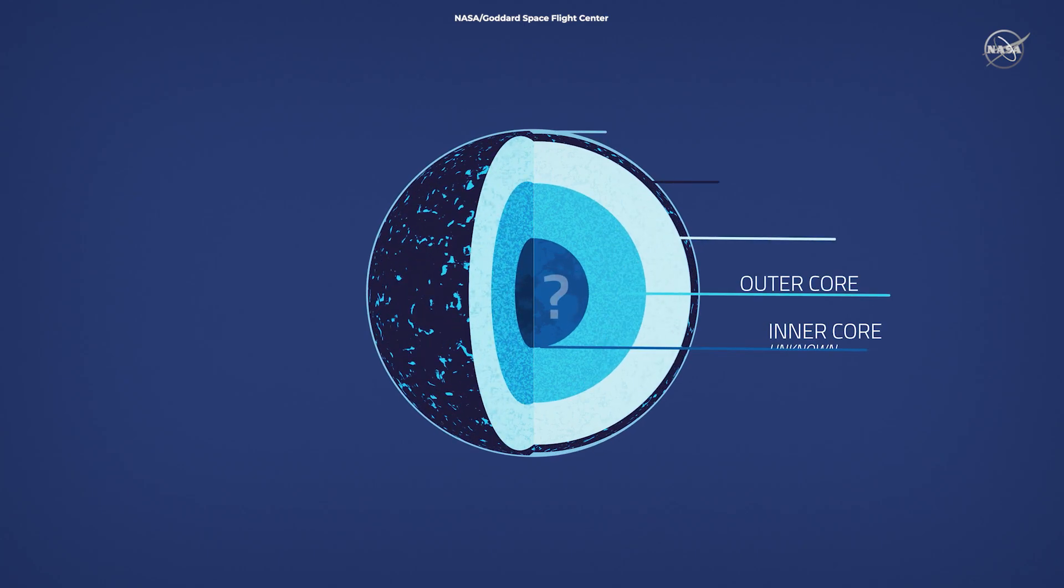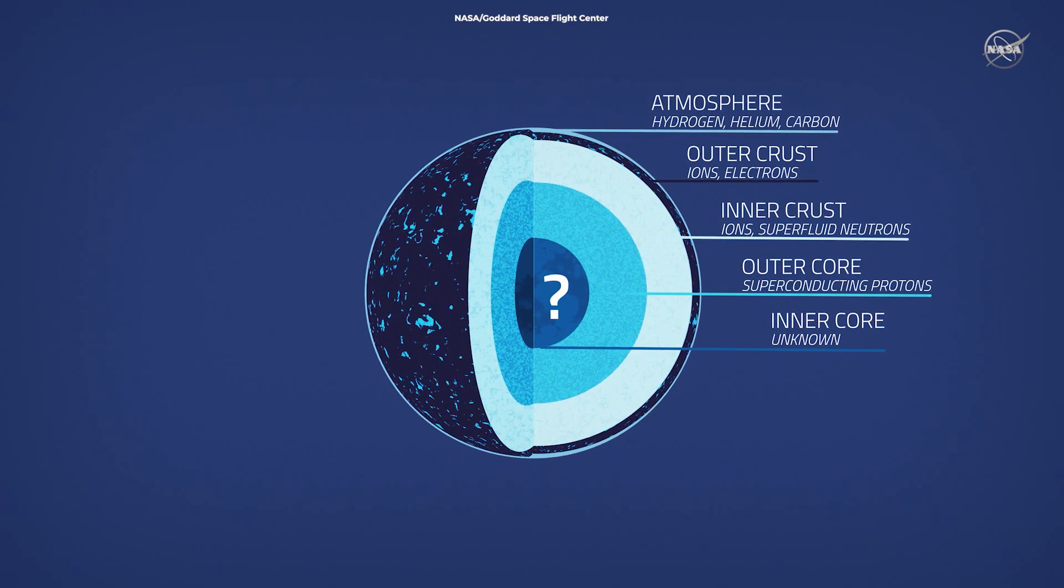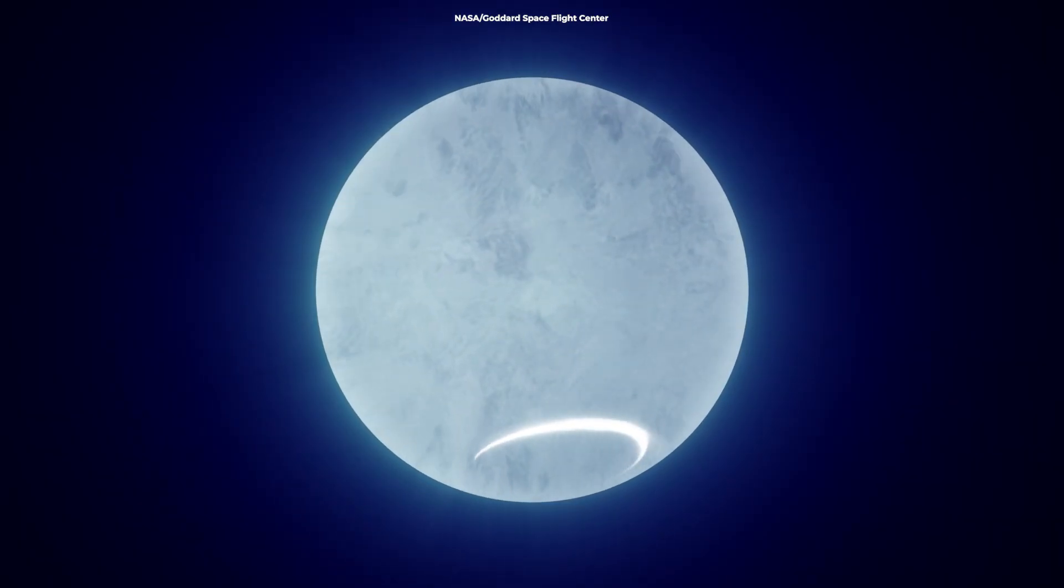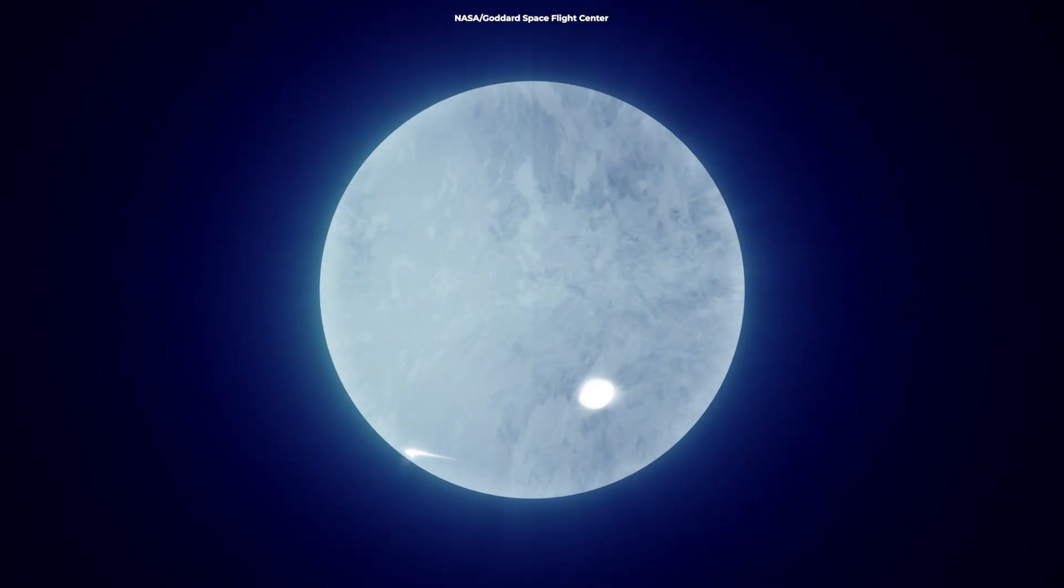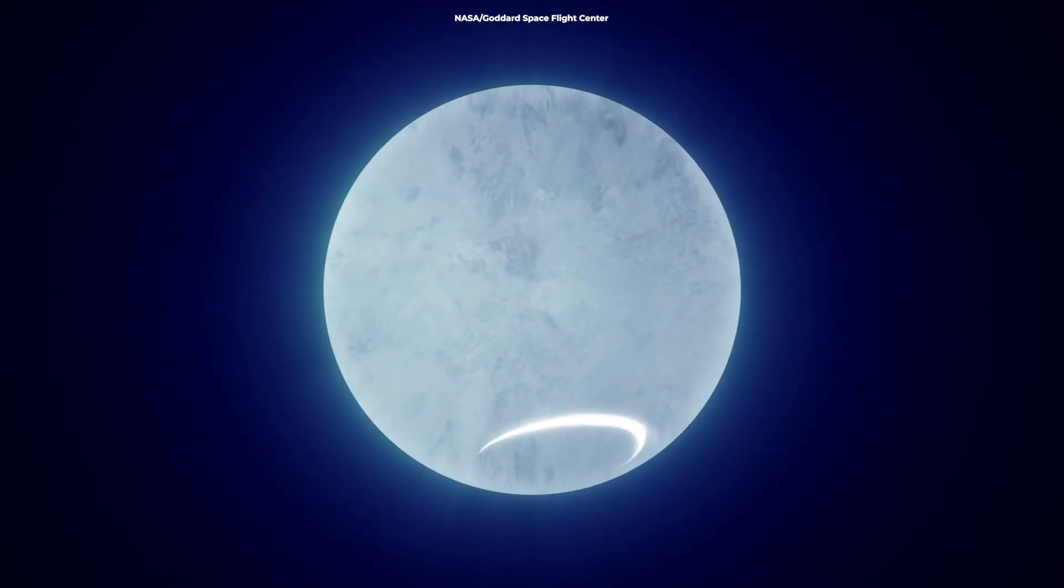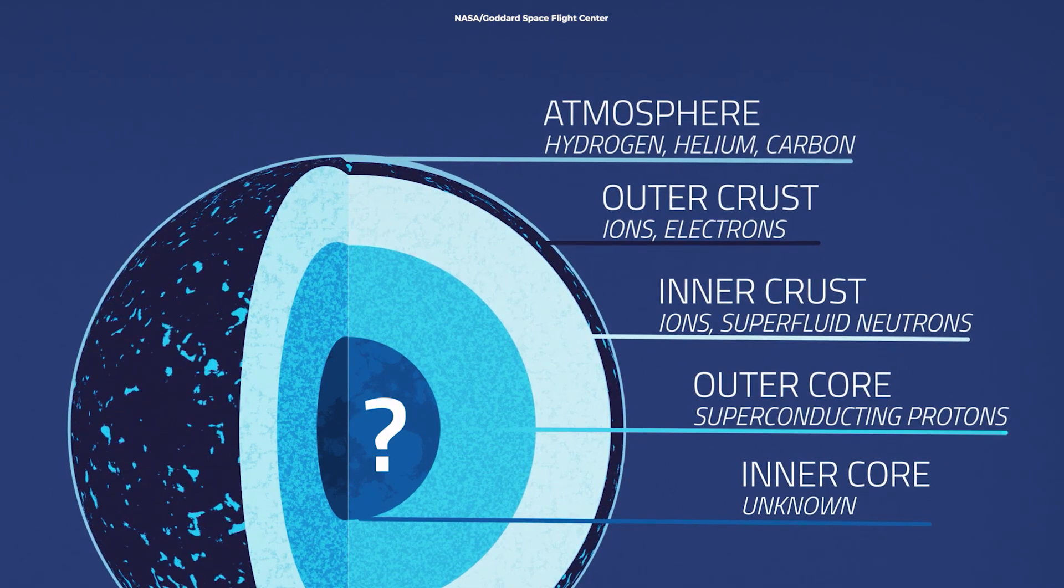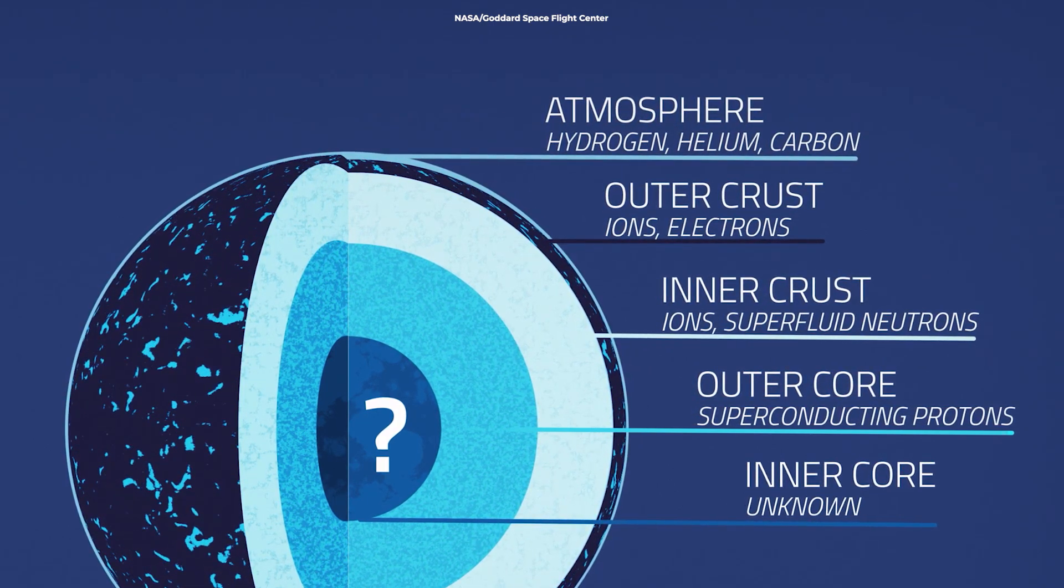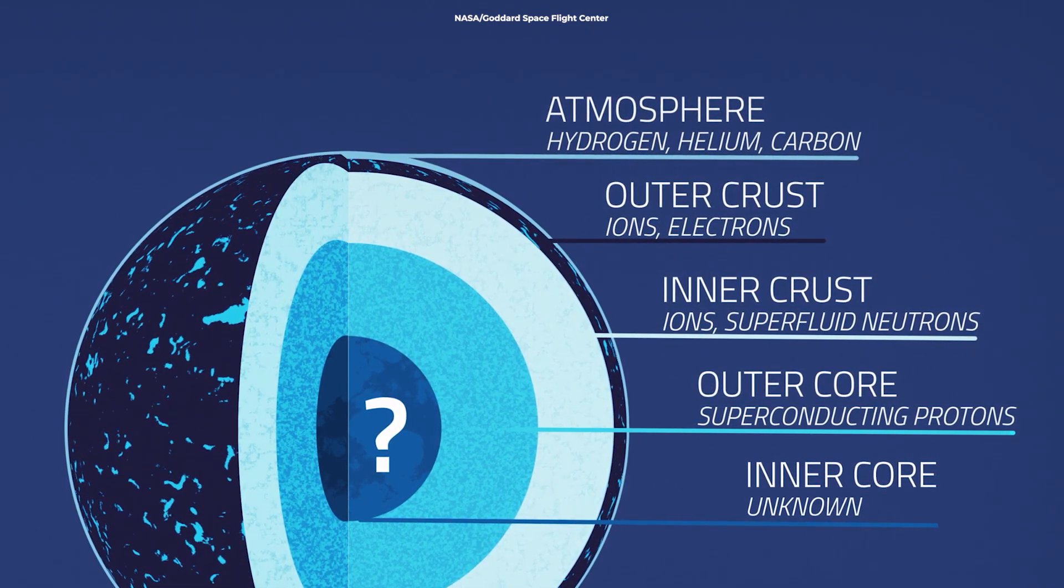No one is quite sure what the internal structure of a neutron star is, but the current idea is that the star possesses a thin crust of iron, maybe about a mile thick. The area under that is largely composed of neutrons, taking various forms the further down they are.